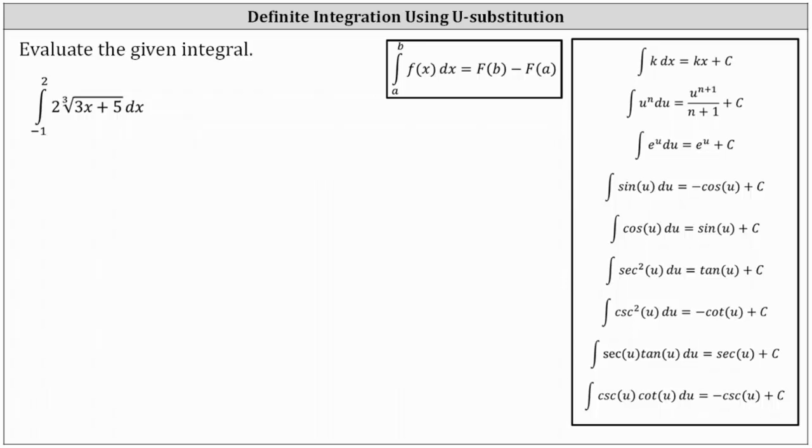In this lesson, we'll use the method of u-substitution to evaluate the given definite integral. We have the integral from negative one to two of two times the cube root of the quantity 3x plus five dx.